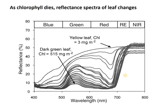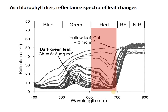Here's another example with a cool dataset showing the reflectance spectra of a healthy leaf — 515 milligrams per meter squared of chlorophyll. Then a yellow leaf that's almost dead, with almost no chlorophyll, is now reflecting in the red instead of absorbing. So the reflectance spectra of the leaf changes as that chlorophyll goes away.